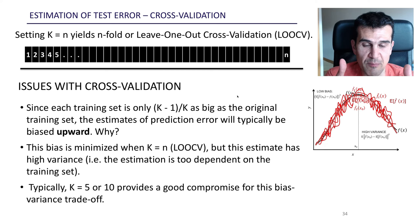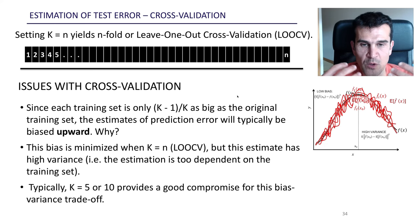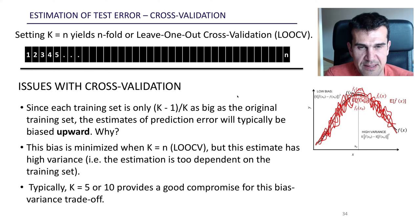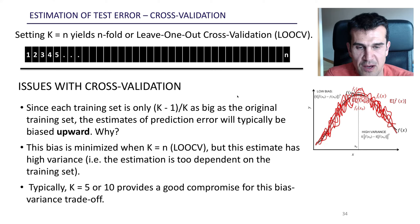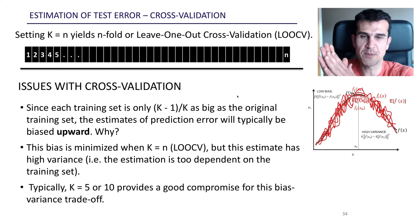This high correlation means the method of leave-one-out cross-validation is very dependent on the particular training set being used. High dependency on the training set means this method of estimating the test error has high variance. So there is a bias-variance tradeoff in estimating the test error: leave-one-out cross-validation minimizes bias because each model is fitted with nearly the whole dataset, but the whole method has a lot of variance.